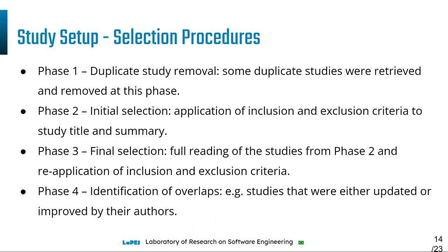For selecting the set of relevant studies, we performed four phases of selection. Phase one involved duplicate study removal. In phase two, we performed initial selection by applying the inclusion and exclusion criteria. In phase three, we performed the final selection — we carried out the full reading of the studies from phase two and reapplied the inclusion and exclusion criteria. In phase four, we identified overlaps, meaning studies that were updated or improved by their authors.